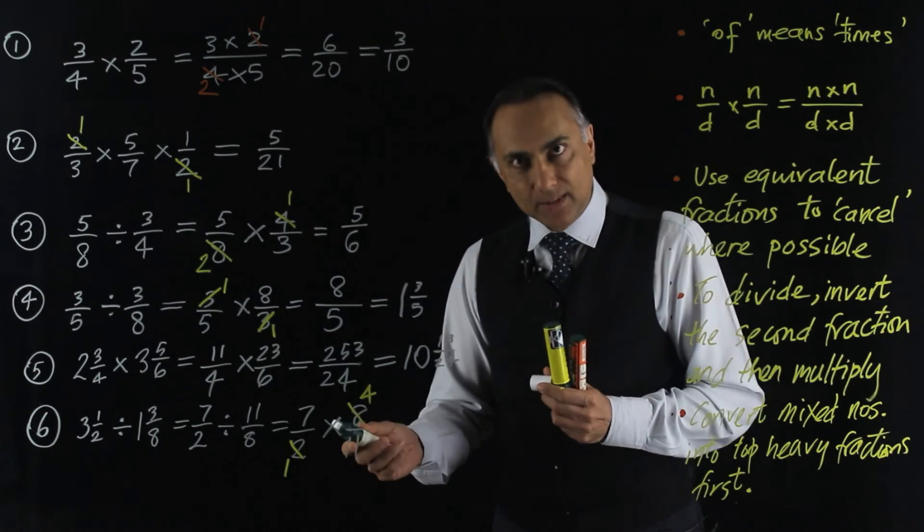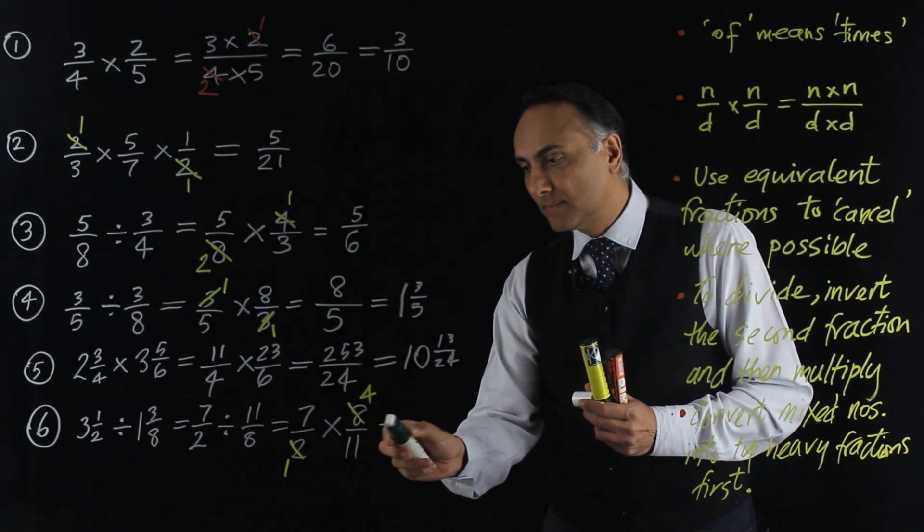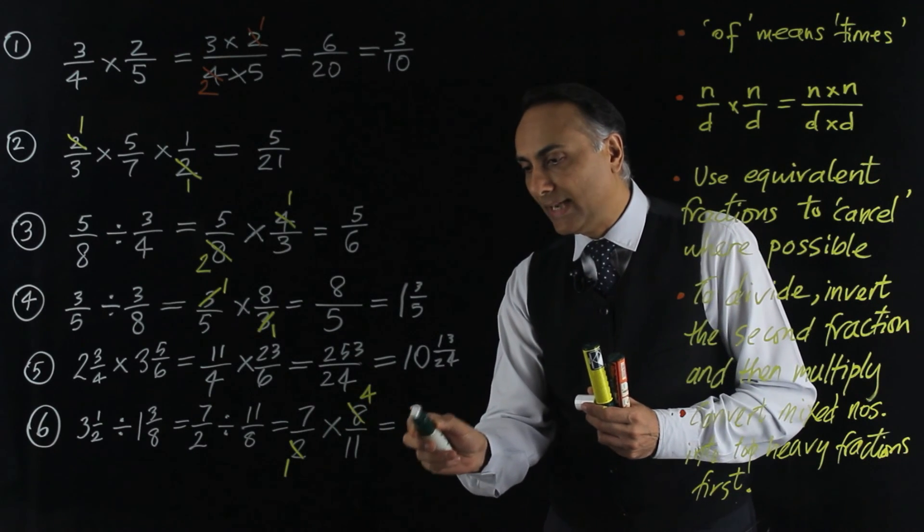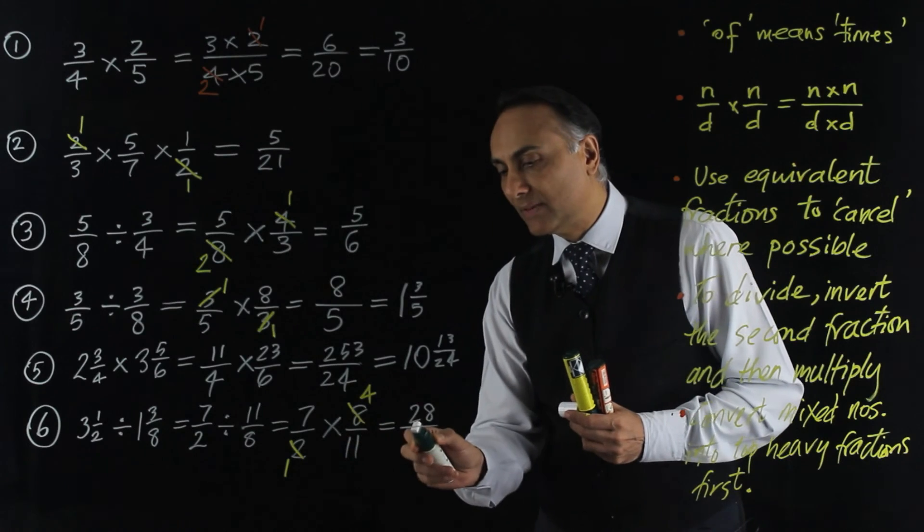There's no more cancelling to be done, so now I multiply out the numerators. 7 times 4, 28. Multiply out the denominators. 1 times 11 is 11. And again.